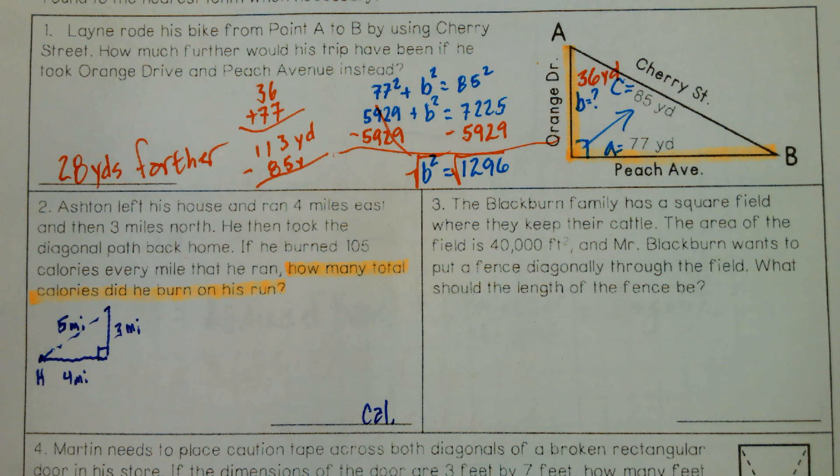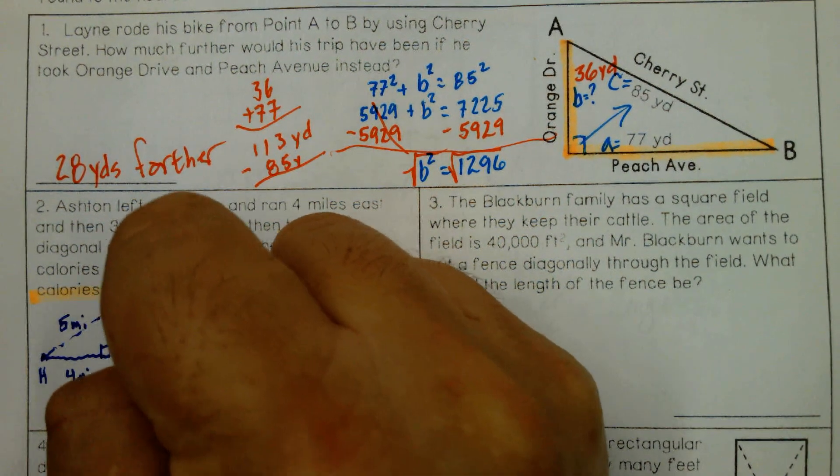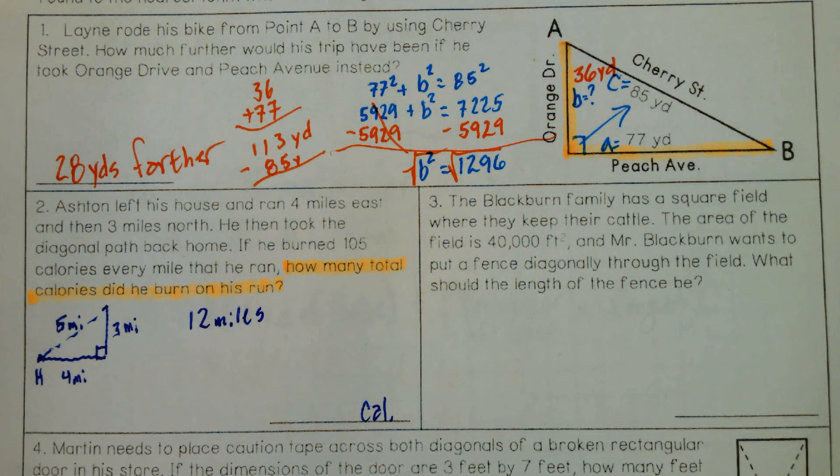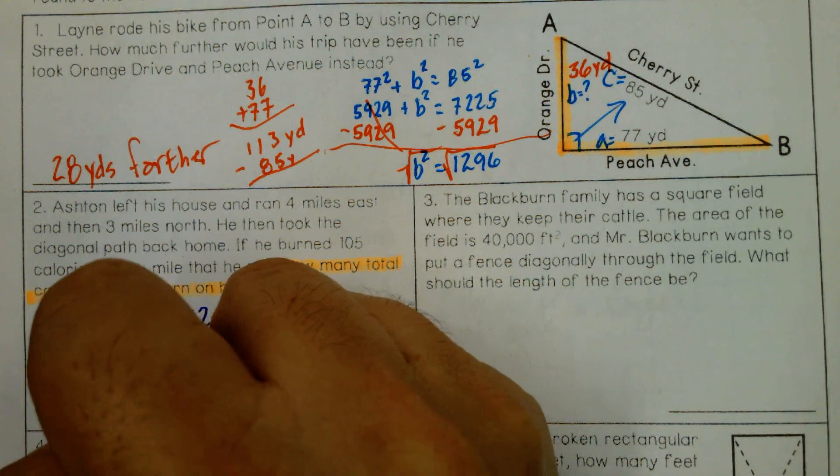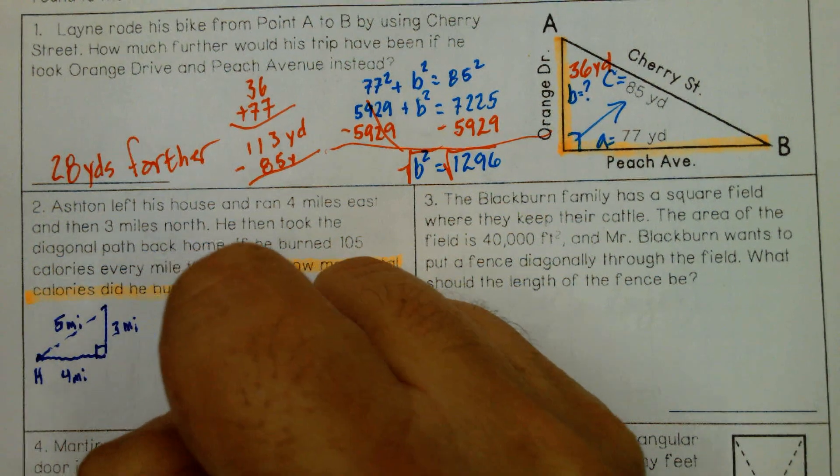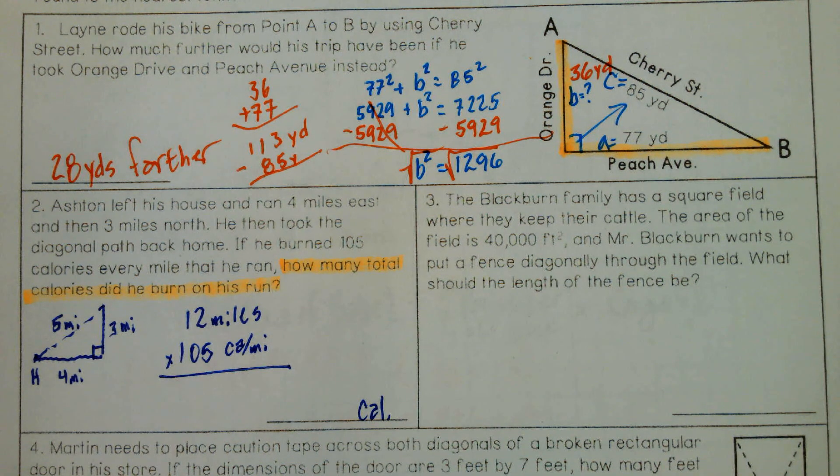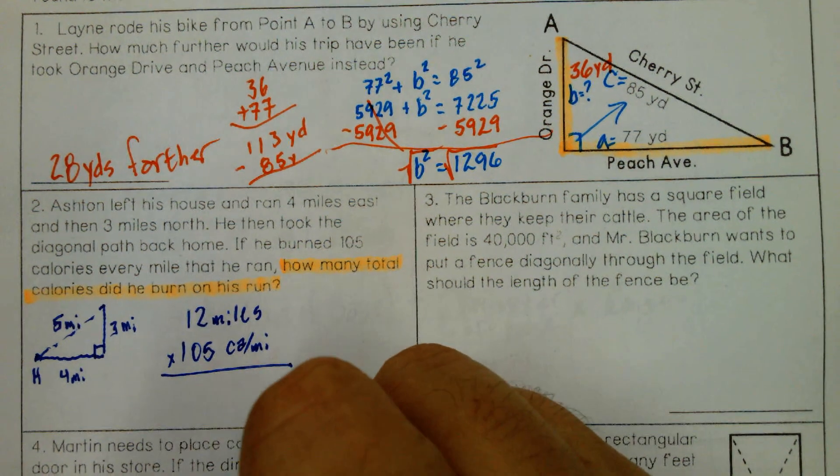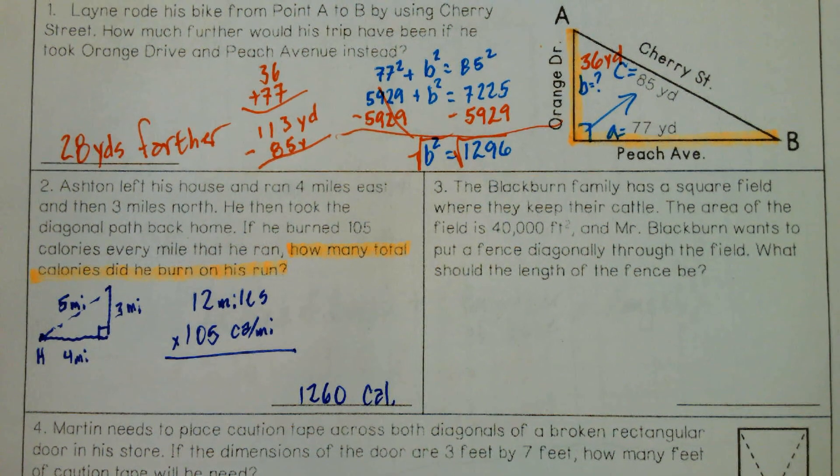We have to figure out how many total miles. How many total miles will run? 12 miles. Four, three, and five is 12 miles. And then we know every mile that he ran, it was 105 calories. So let's figure out how much that is. 1,260 calories total on his run.